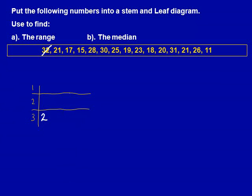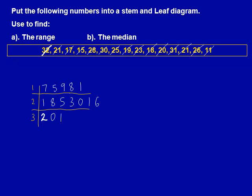Here, we've crossed off 32 and put the 2 next to the 3 in the table to represent 32. Next, we've crossed off 21 and put the 1 in the table next to the 2 to represent 21. We fill in all the other numbers this way, and here is the completed rough version. You should label this as rough.